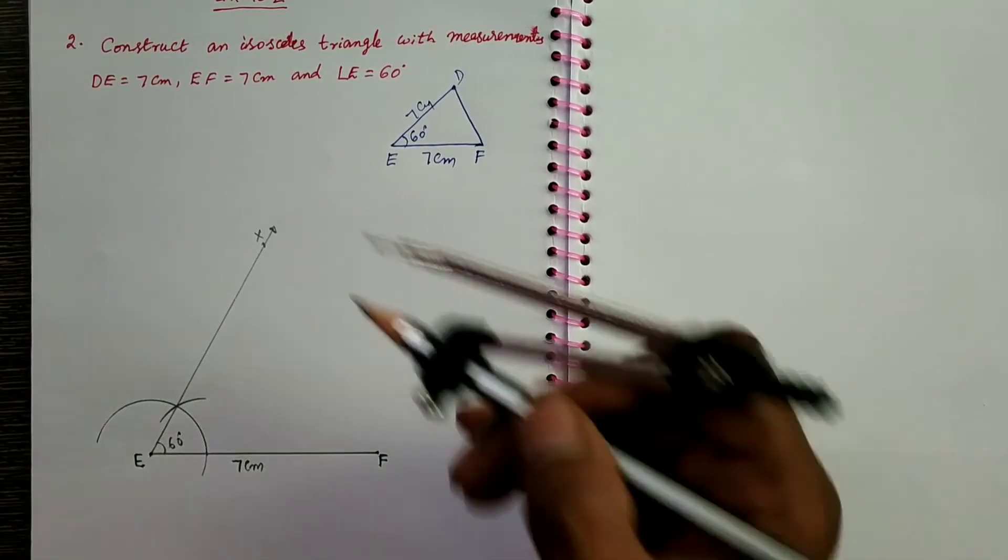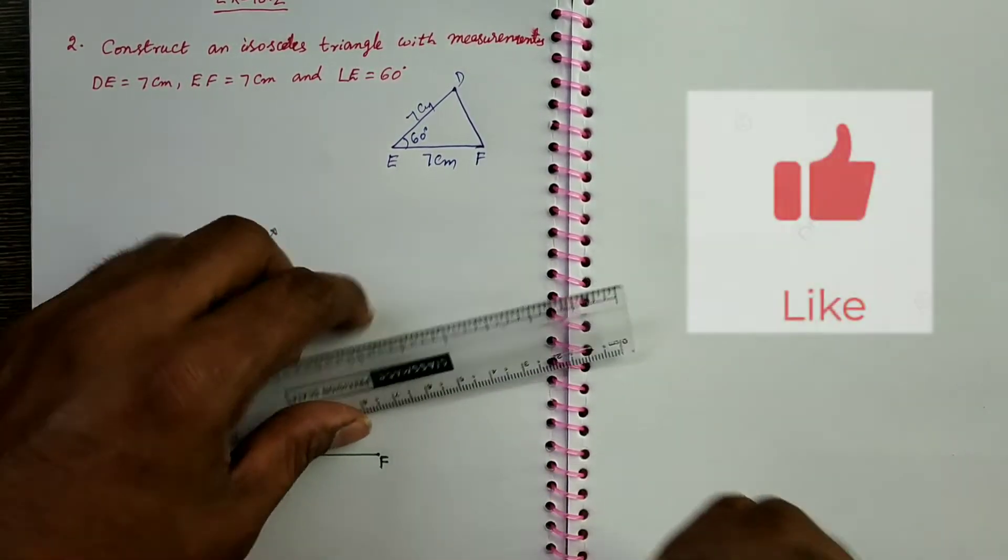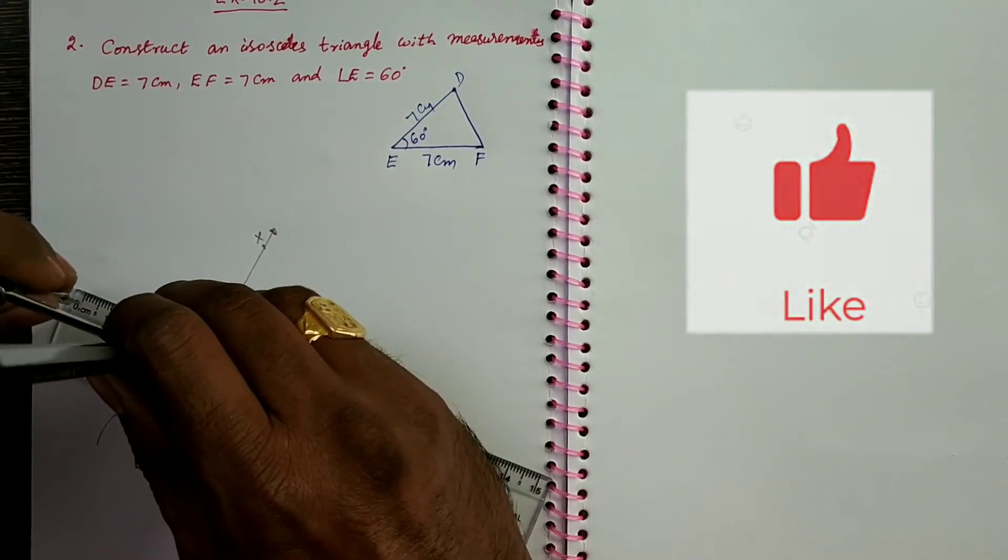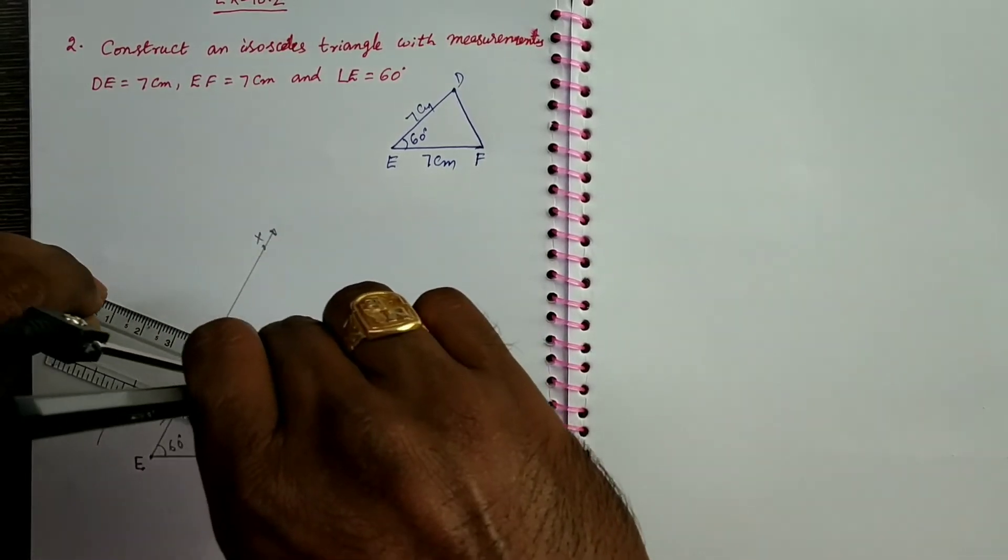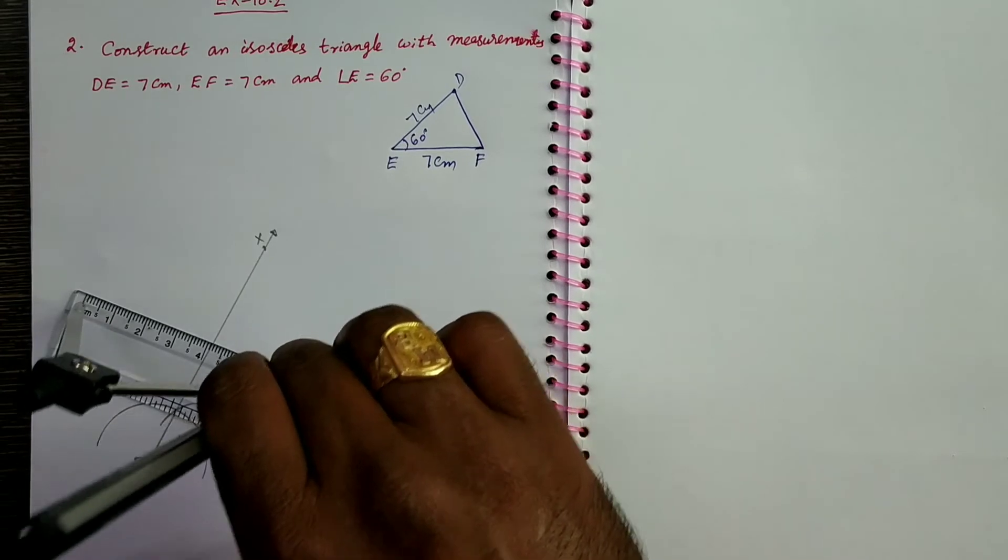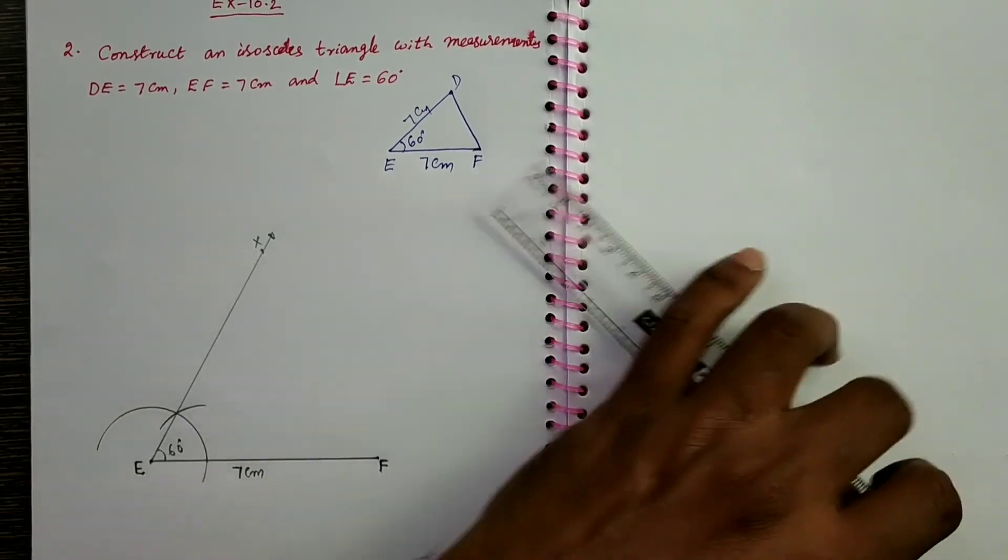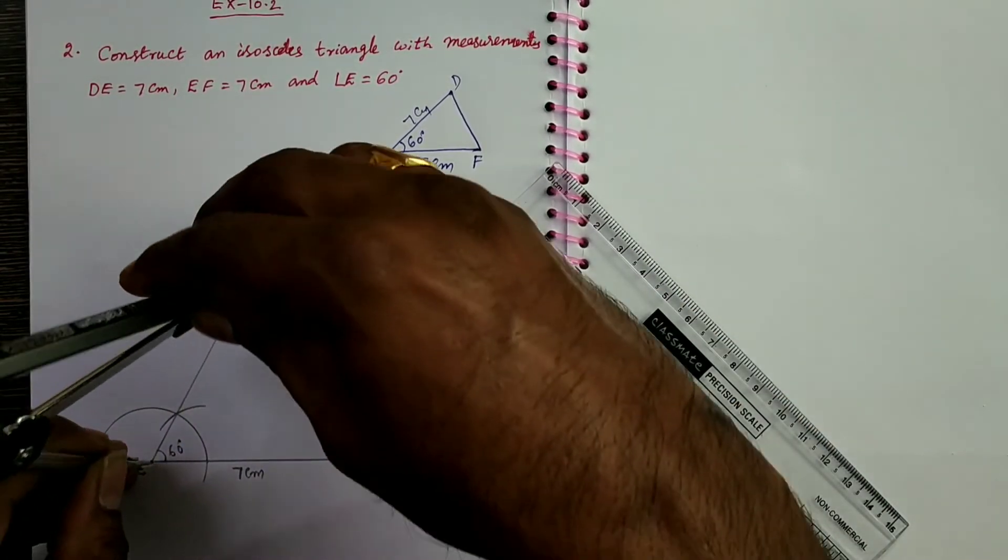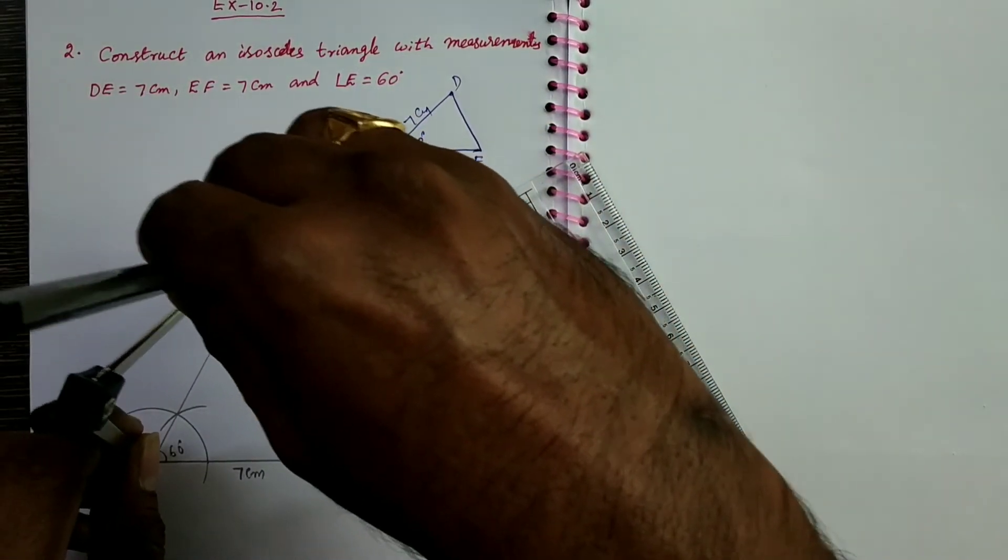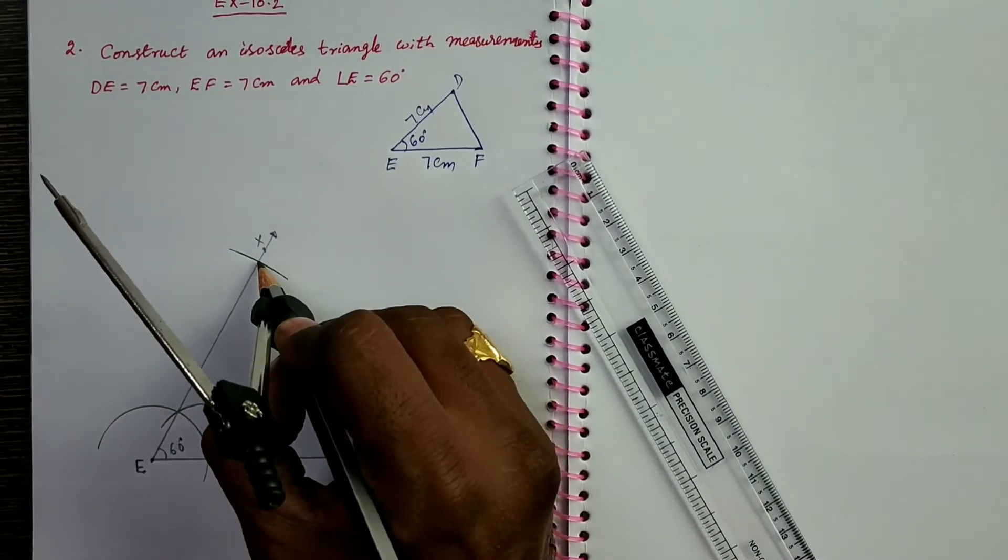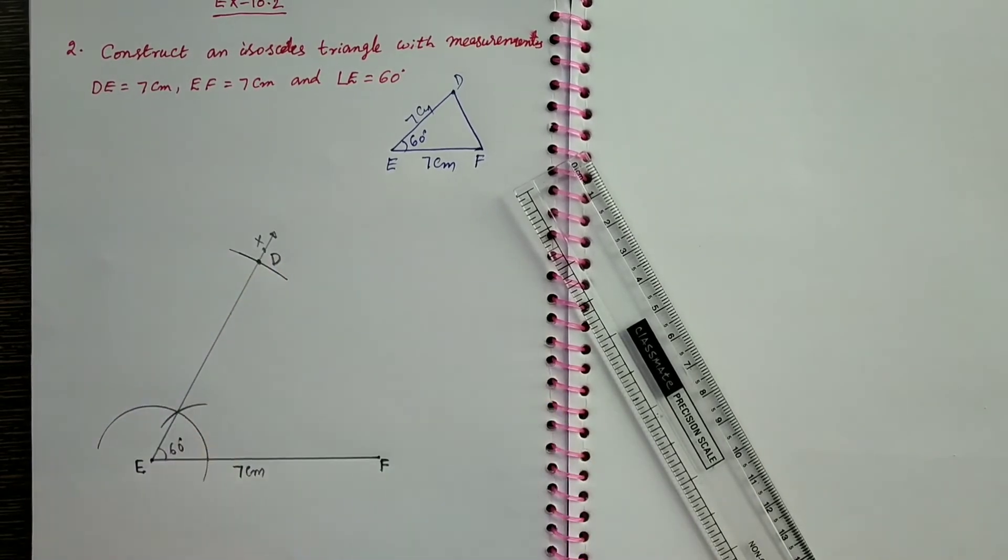Now DE, that is also 7 centimeters. So take a scale and take a compass. Keep compass point at 0 and pencil point at 7 like this. Take E as center. Take E as center. 7 centimeters as radius. Draw an arc. It cuts the ray EX at D.